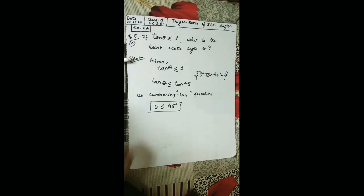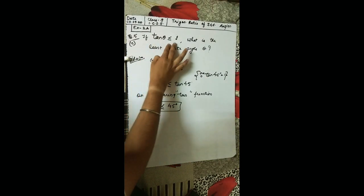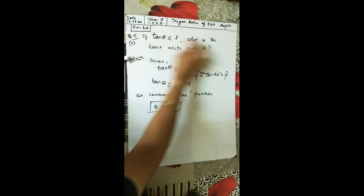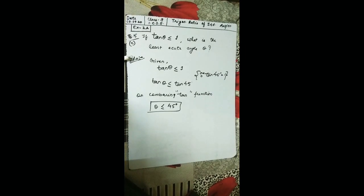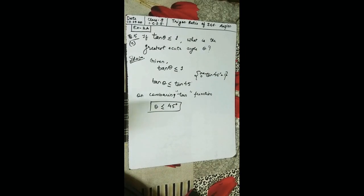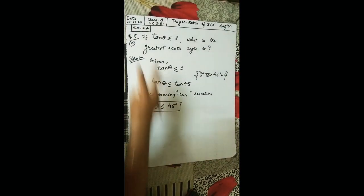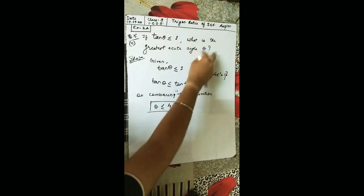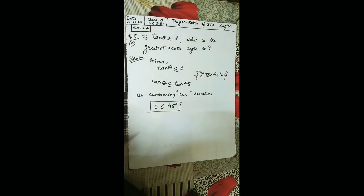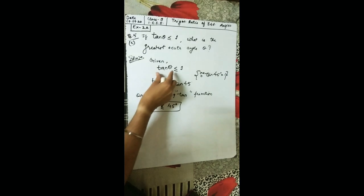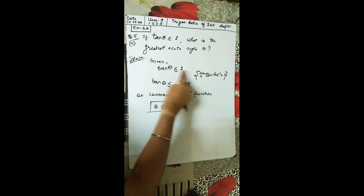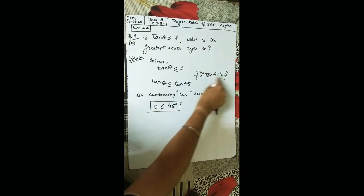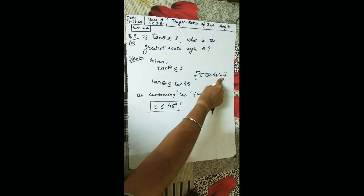Similarly, the next question: if tan θ ≤ 1, what is the greatest acute angle θ? The same procedure — tan θ ≤ 1, and from the table tan 45° = 1.